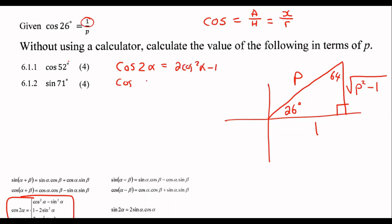Cos two alpha is equal to two cos squared alpha minus one. So what that means is that if you have cos 52, see, if this is two alpha, then this part must only be alpha. So it will be half. So if this is a 52, then this one must be a 26. That's how these formulas work.